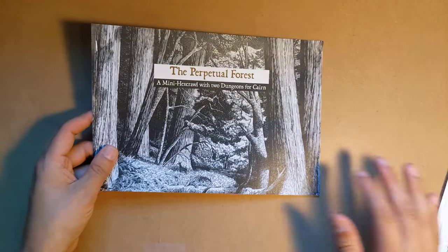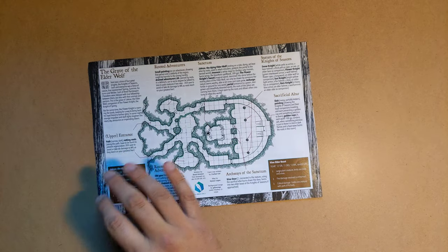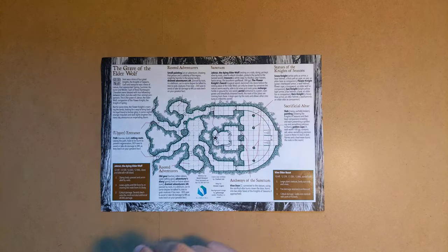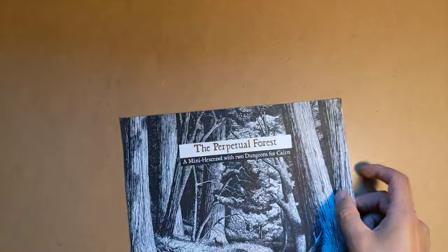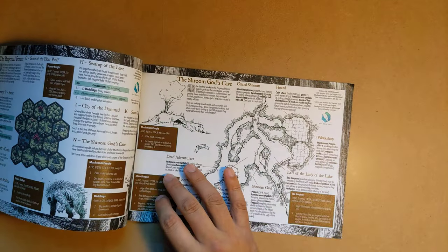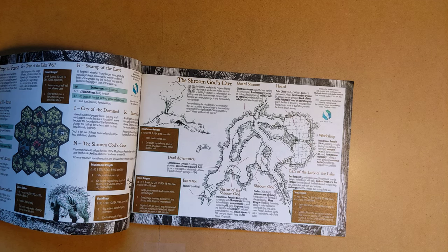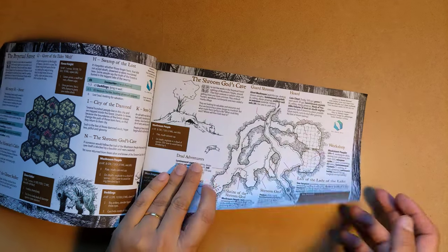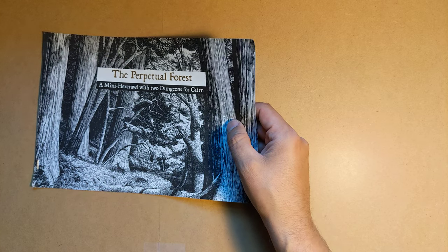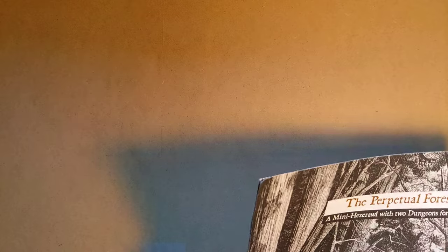Next is the Perpetual Forest, which is a mini hex crawl. It has two dungeons. You can see probably some stuff you've seen elsewhere before. I'm gonna try Renee Kramer. I just think it looks really nice. And I cannot find my notes for it, so I don't actually know how to quickly describe it. Oh, there it is. It's just a hex crawl with two one-page dungeons and monsters to relax. I didn't do a very good job.